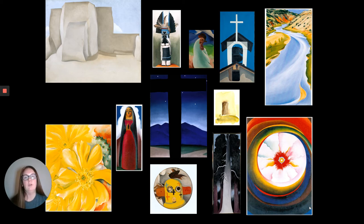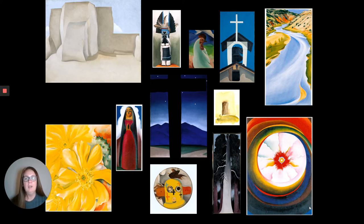The first time Georgia O'Keeffe came to New Mexico was in 1917. She was traveling from Texas to Colorado with her sister when the train broke down in Santa Fe, and she was there for three days. She's been quoted as saying she was always trying to get back to New Mexico. She came back in 1929 and spent three months in Taos, creating many pieces — landscapes with the river, buildings, and symbols of New Mexico such as a penitente cross or a Kachina doll.